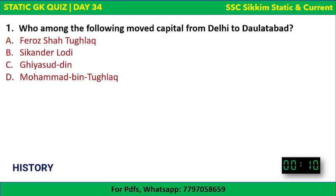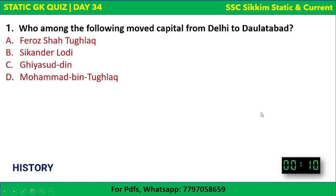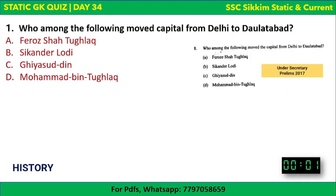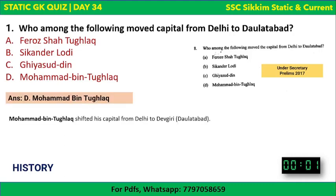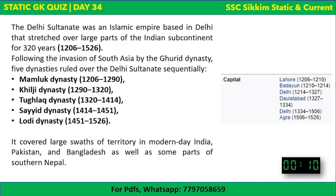The first question: who among the following moved the capital from Delhi to Daulatabad? The correct answer is Mohammed bin Tughlaq. As mentioned, this question was asked in Under Secretary Prelims 2017. Mohammed bin Tughlaq was the one who shifted the capital from Delhi to Devagiri. Tughlaq was a ruler of the Delhi Sultanate.